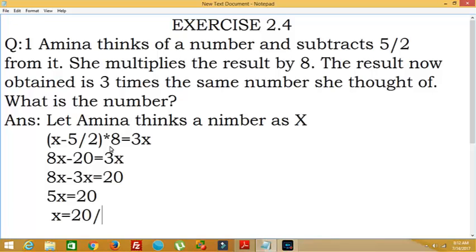So x equals 20 divided by 5, which equals 4. She thought of the number as 4.